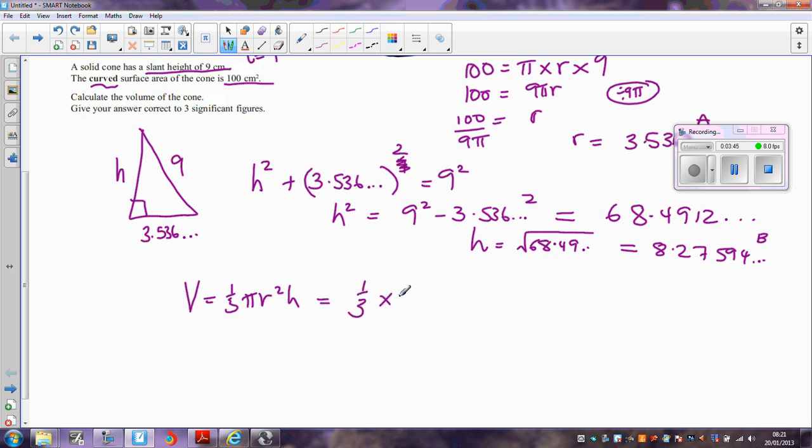So I'm going to do a third times pi multiplied by, now r is that 3.536 which must be squared, and then h I've just found, and that's the 8.2759 that I stored in my calculator memory. If I multiply those all together, I get 108.4079, which I'm going to round to the three significant figures the question asks me for, and get 108 centimeters cubed.